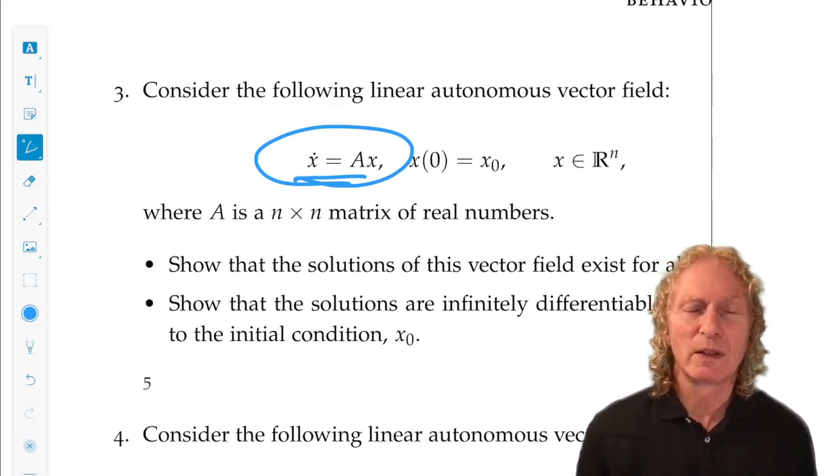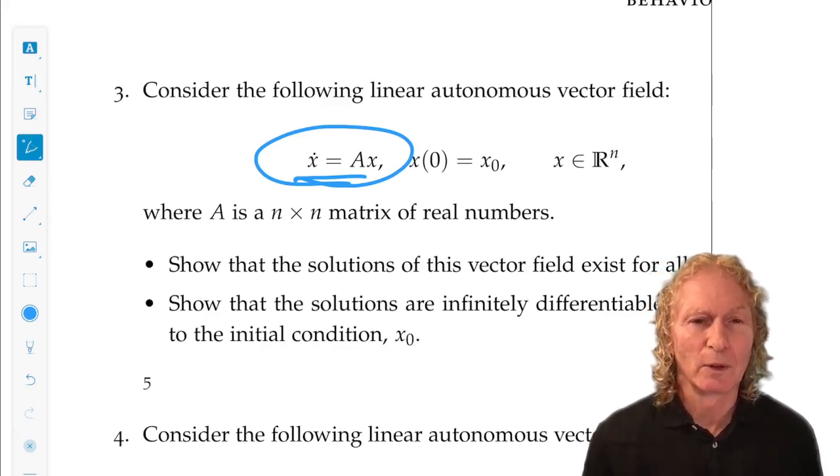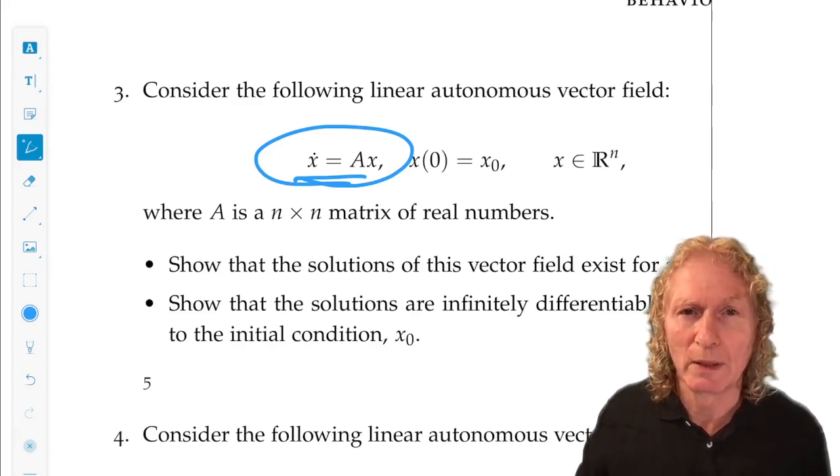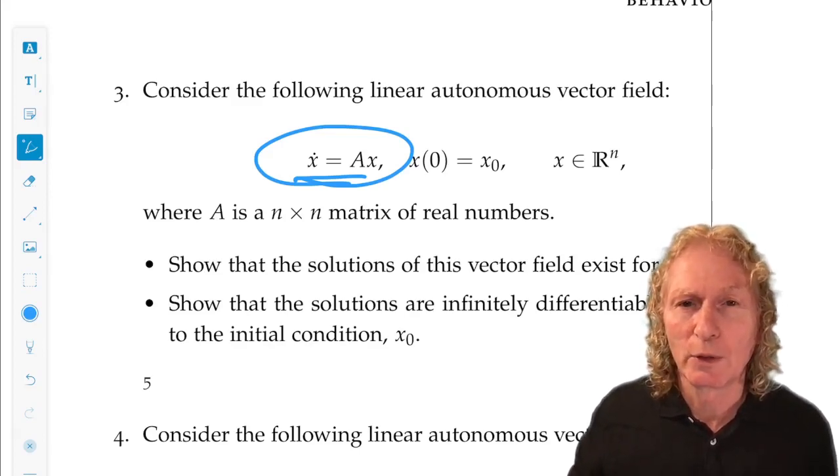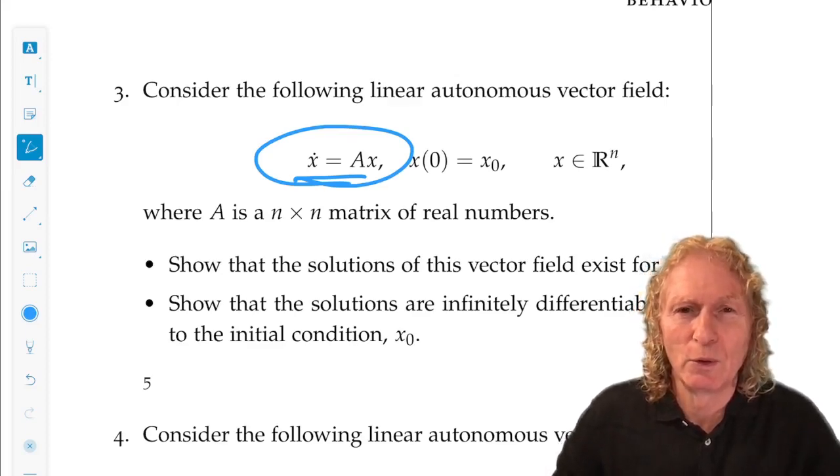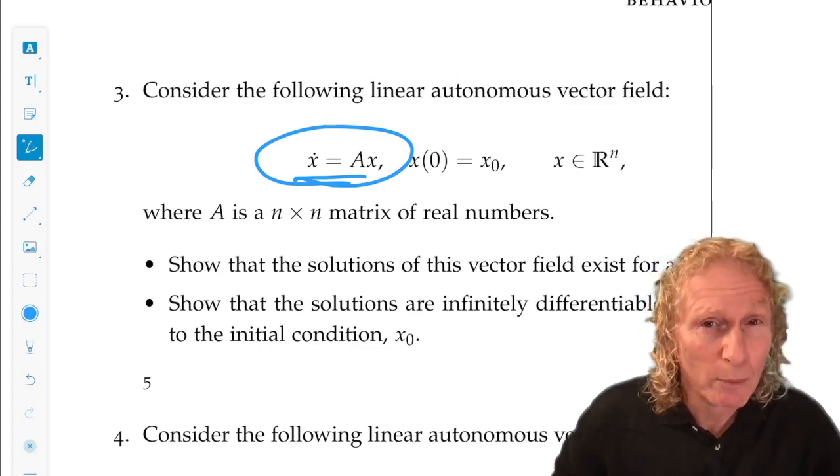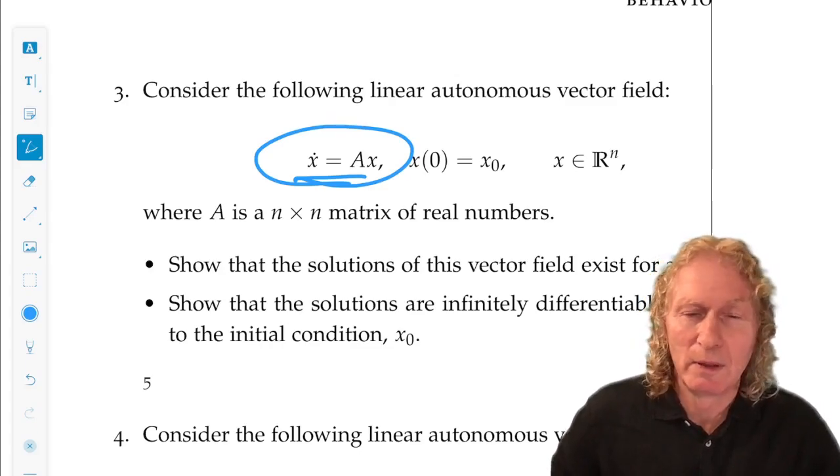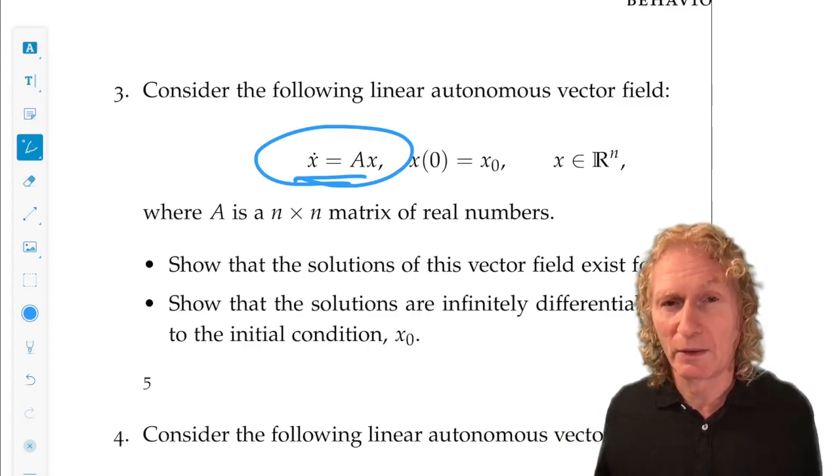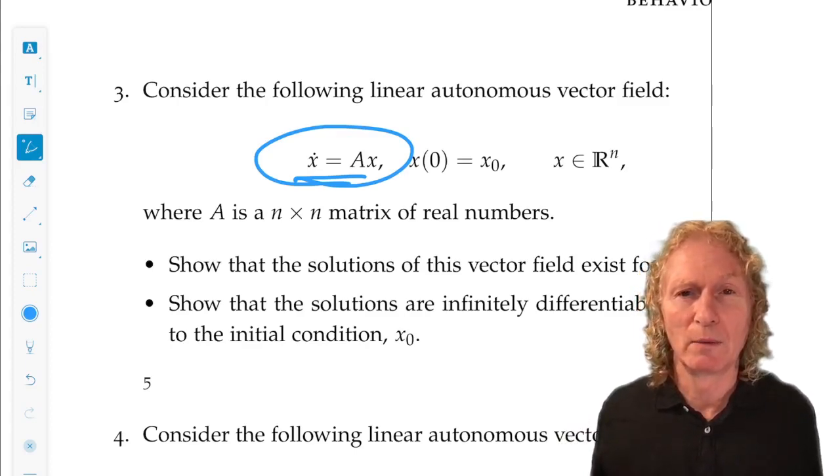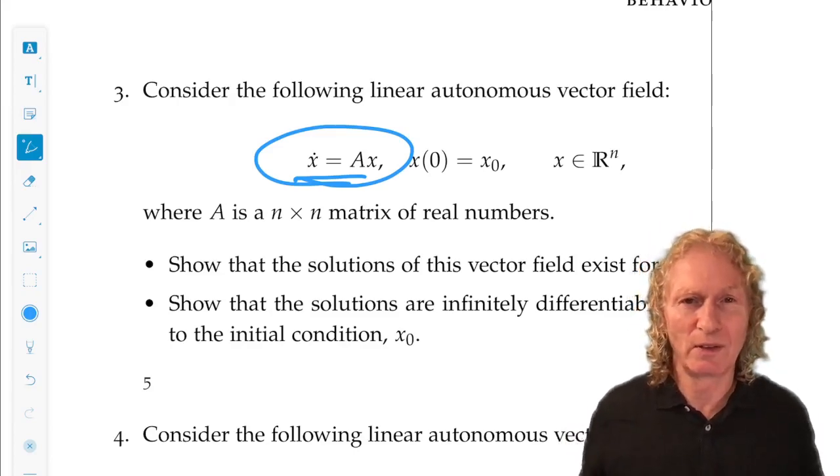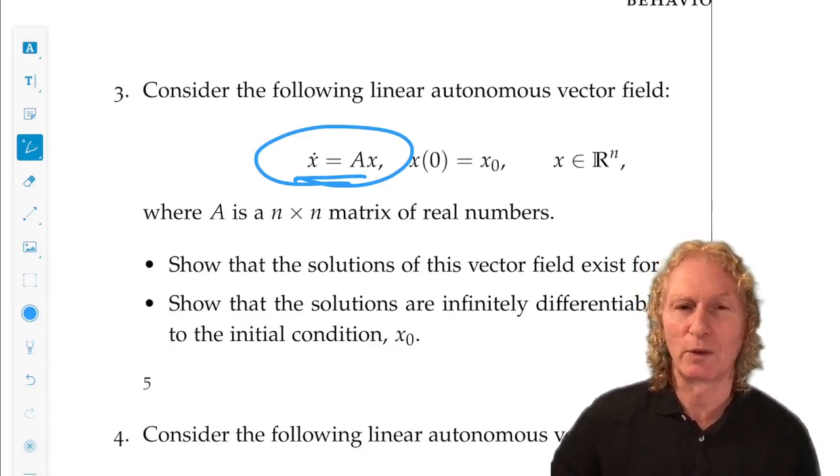But this is the thing about linear systems. In general, the origin is the only equilibrium point. One of the distinguishing features of nonlinear systems, as opposed to linear systems, is they can have multiple equilibria. And they can be different attracting sets with different basins of attraction that compete with each other in some sense. And there's a very interesting story there.